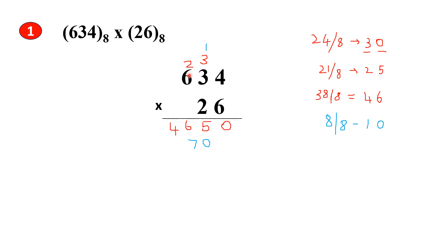Next, 2 into 6 gives us 12. 12 is not an octal number. To change it into an octal number, divide by 8. We get 1 as the quotient and 4 as the remainder. So write 4 as the sum and 1 as the carry. You can write it here itself.